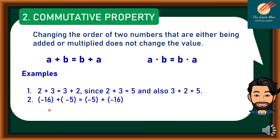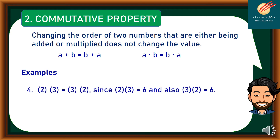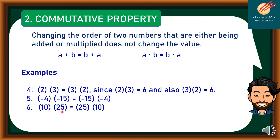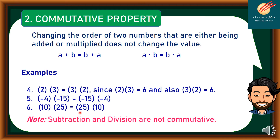Another example: negative 16 plus negative 5 is the same as negative 5 plus negative 16. Also, 100 plus 99 equals 99 plus 100. For multiplication: 2 times 3 equals 3 times 2, since both equal 6. Likewise, negative 4 times negative 15 equals negative 15 times negative 4. Also, 10 times 25 equals 25 times 10. Note that subtraction and division are not commutative.